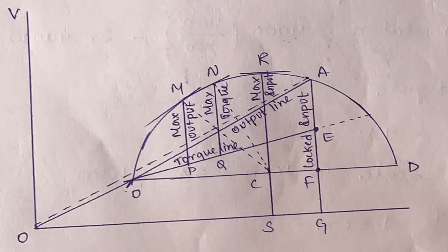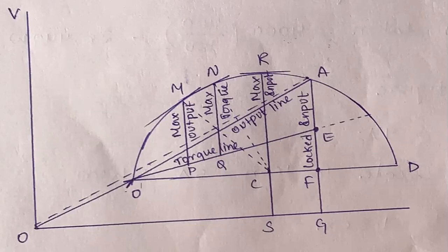Next, coming to the maximum torque or rotor input N. This N will be occurring where this tangent is parallel to the torque line O'E. So N point tangent is parallel to O'E. M point tangent is parallel to O'A and N point tangent is parallel to O'E. N is also drawn from C only — when we draw from C, C will be extended to N, which is perpendicular to torque line O'E. The value of maximum torque is NQ. This is also called as starting torque or pullout torque.